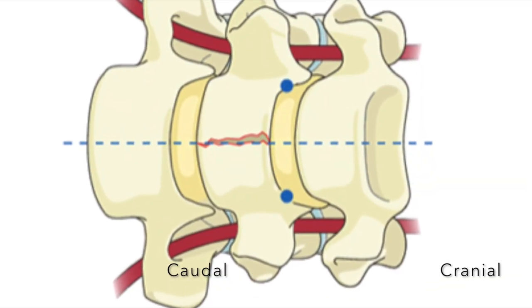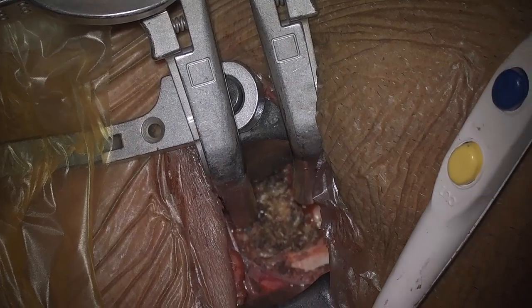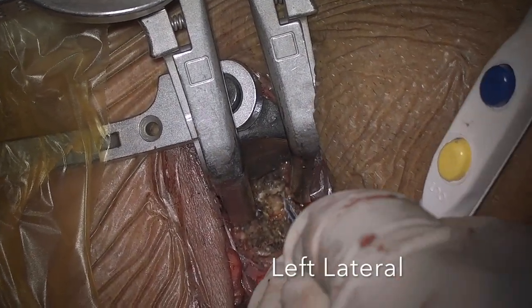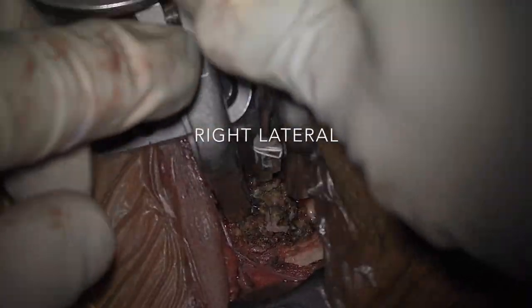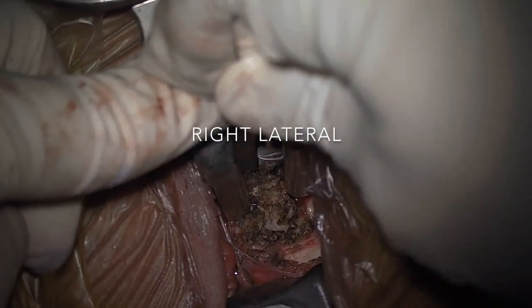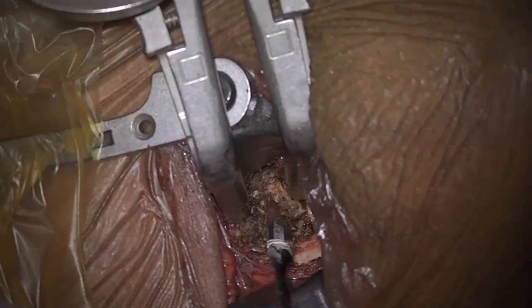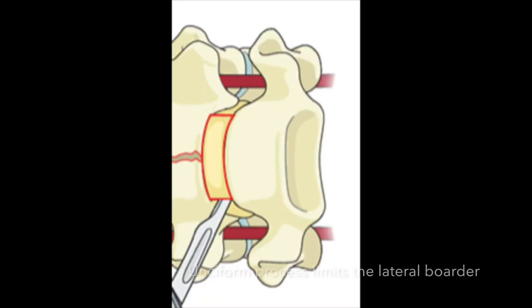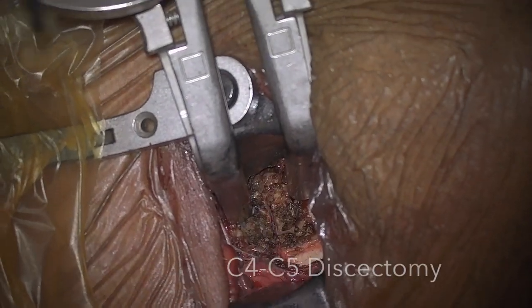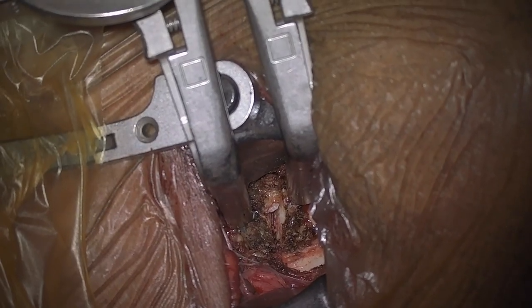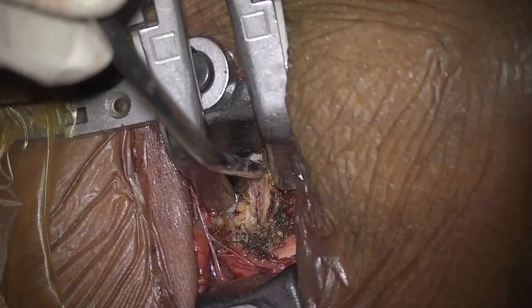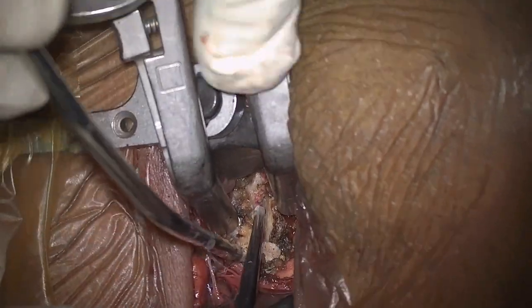The right side of the screen is the cranial end; the left side of the screen is the caudal end. The surgeon is standing on the left side of the patient. A number 11 blade is used to start the discectomy. The uncovertebral process determines the lateral limit of the discectomy.